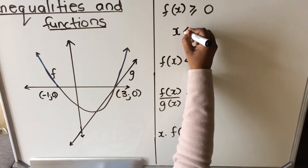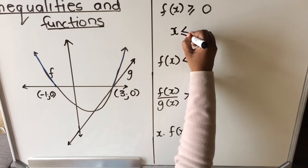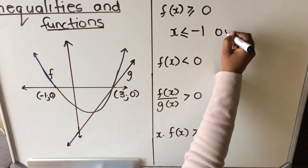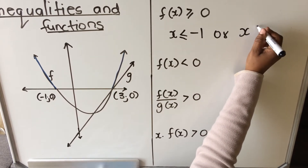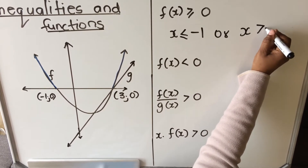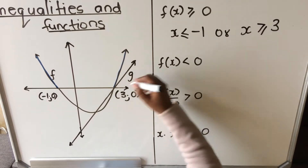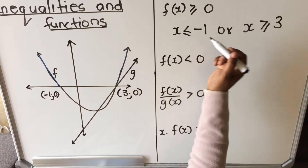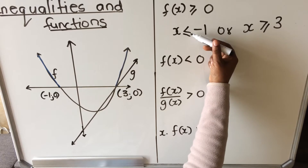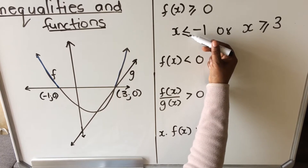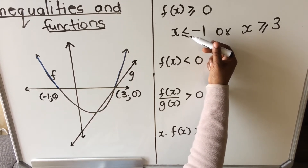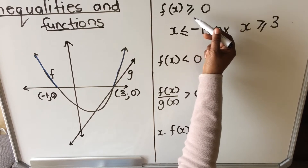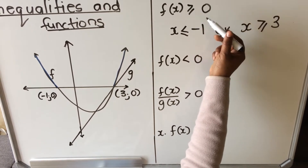So how do we write that? We say x is less than or equal to minus 1, or x is greater than or equal to 3, because from here going that side is greater than 3. Whether you write greater or equal, or just greater, depends on what you are given. Here we ask where the function is greater than or equal to zero, so those are your answers.